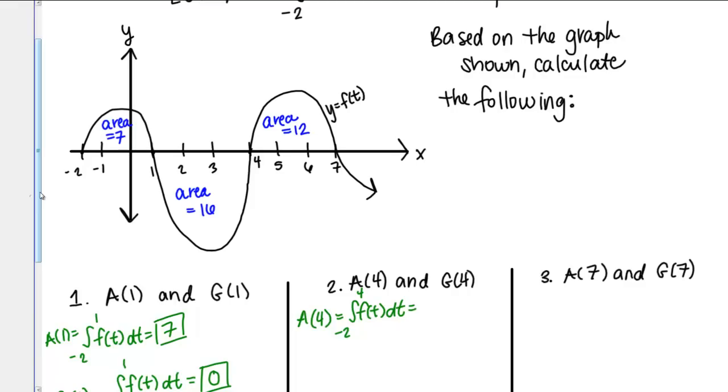Now I want the net area bounded by the curve between negative 2 and 4. Let's look at the picture. From negative 2 to 1, I've got this area of 7. That's going to be part of it.